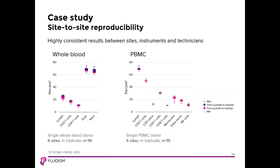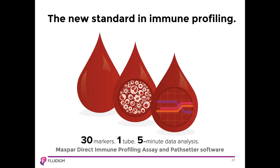The PBMC plot shows the same for the combined data from five sites, equaling 15 FCS files. As you can see, highly consistent results were observed between sites, instruments, and technicians for both whole blood and PBMC samples. The Maxpar Direct Immune Profiling Assay sets a new standard in immune profiling — 30 canonical immune cell markers that in concert identify at least 37 immune cell populations, all in a single tube of sample. The combination of a pre-optimized, easy-to-use, high-dimensional immune cell panel for analysis by mass cytometry with an automated software solution provides the most powerful and reliable way to analyze your precious PBMC and whole blood samples time after time.